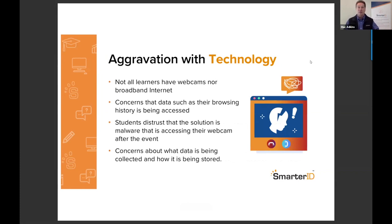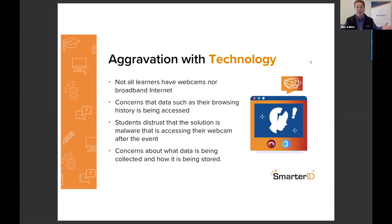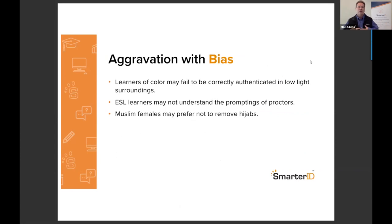The third aggravation is technology. Not all learners have access to broadband internet or webcams at home. Students are concerned about what data is being observed on their computer — whether proctoring software is looking at their browsing history, or whether webcam access during a test could be used at other times. The fourth aggravation is bias. Learners of color, especially in poor lighting conditions, receive false positives. English as a second language learners may not understand proctor prompts, and some persons have religious reasons for not removing head coverings.